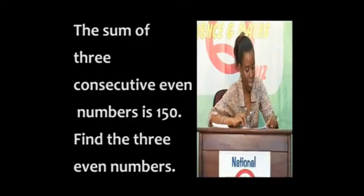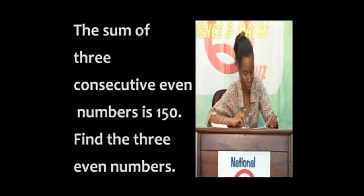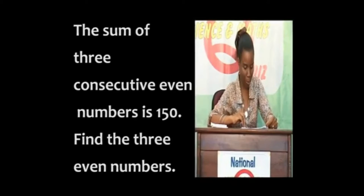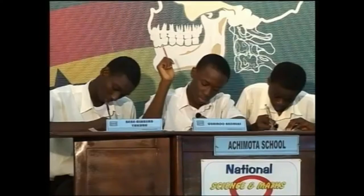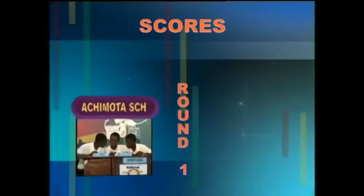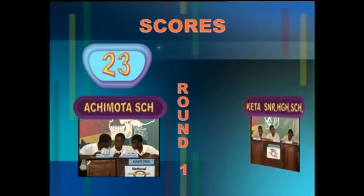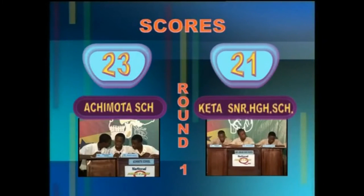At Achimota School, the sum of three consecutive even numbers is 150. Find the three even numbers. Yes, Andreas. 48, 50, and 52. That's right. At the end of the first round, the scores are Achimota School 23 points, Keta Senior High School 21 points.